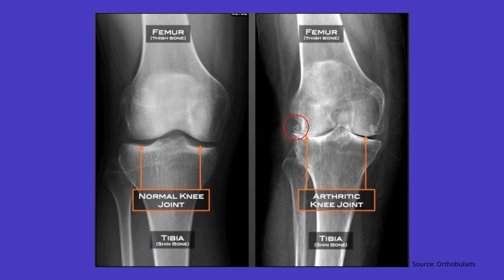You can also observe the osteophytes here, which form as the body's natural response to the loss of cartilage. You can also observe bone eburnation and subchondral cysts and sclerosis throughout the joint.